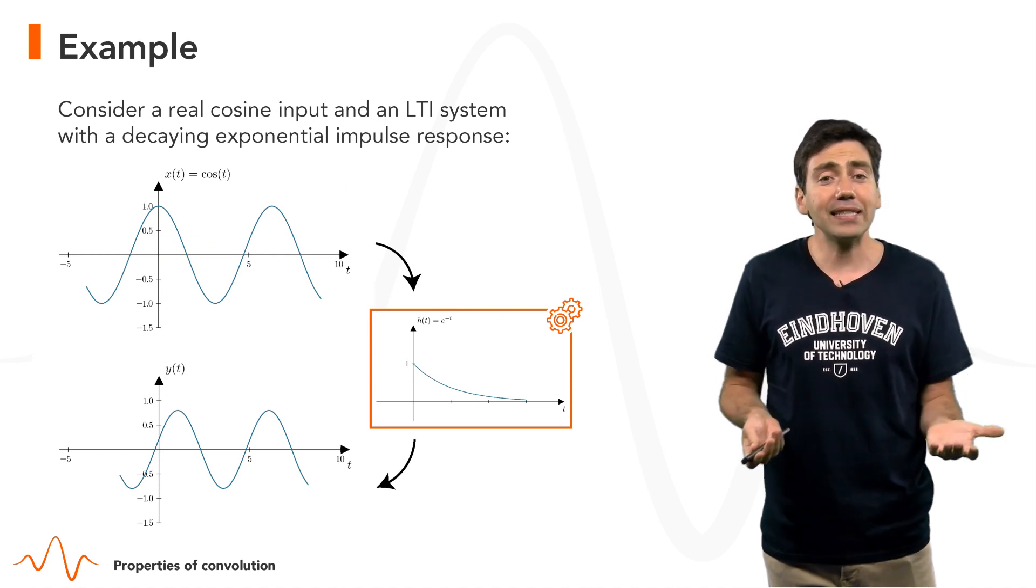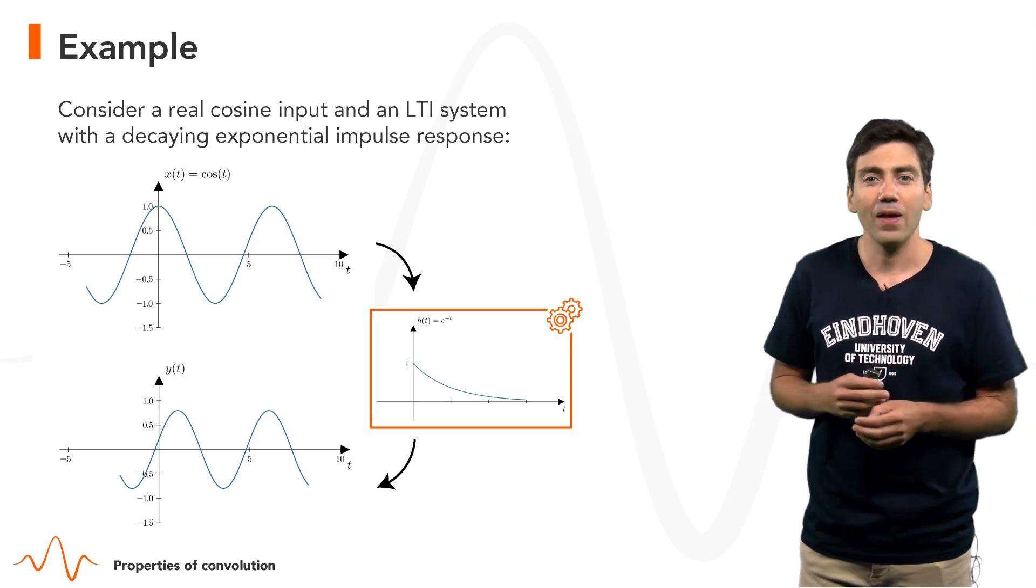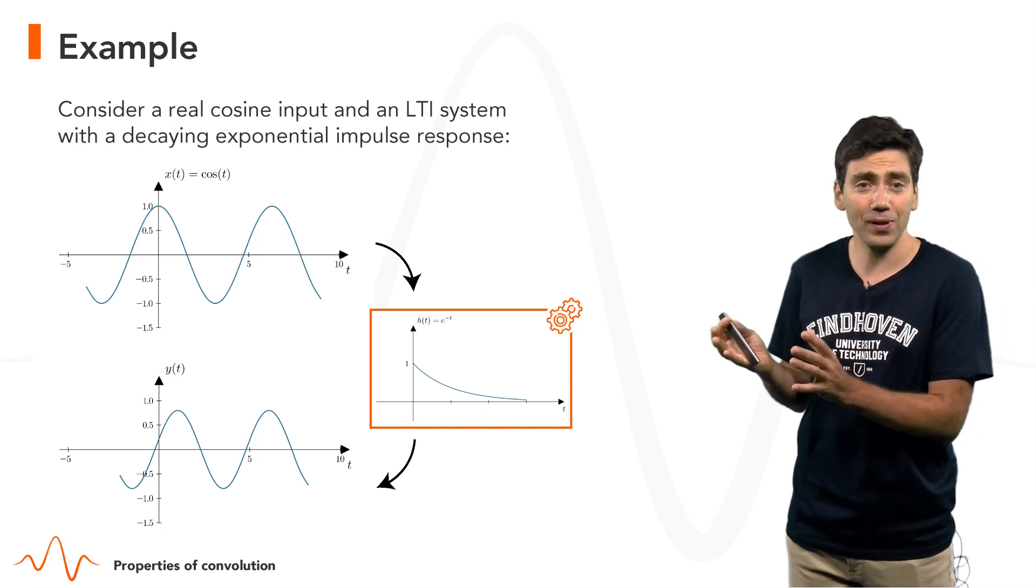Now, here is an example where we want to compute the response of an LTI system to a cosine. We know from the previous slide this will also be a cosine but with different amplitude and phase.